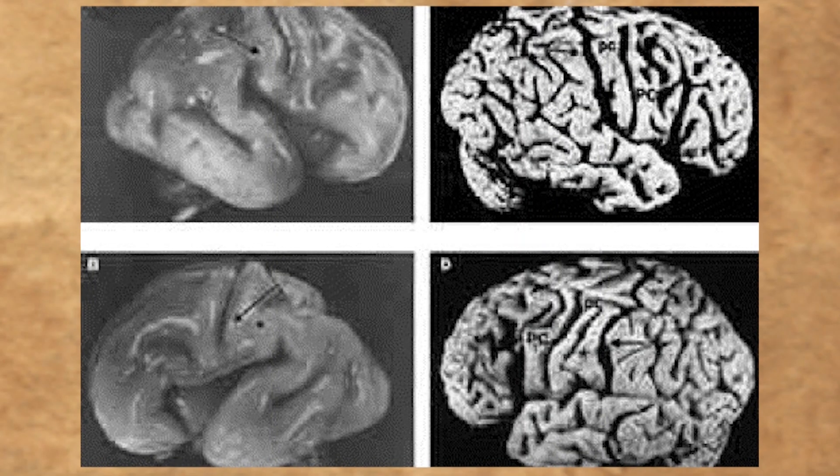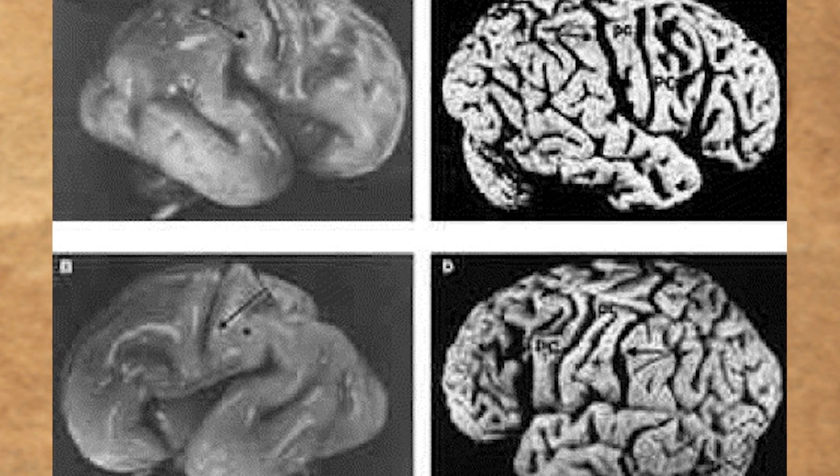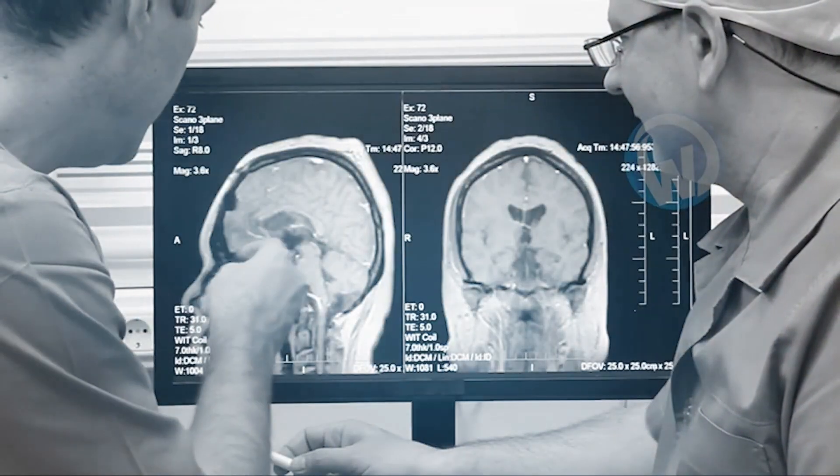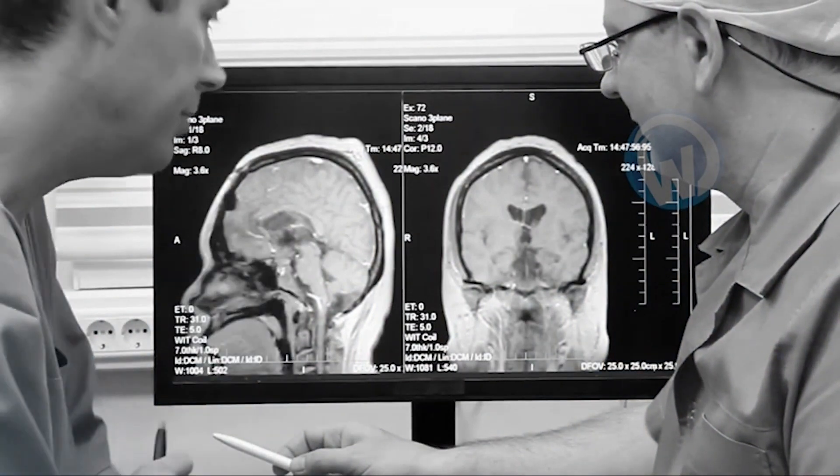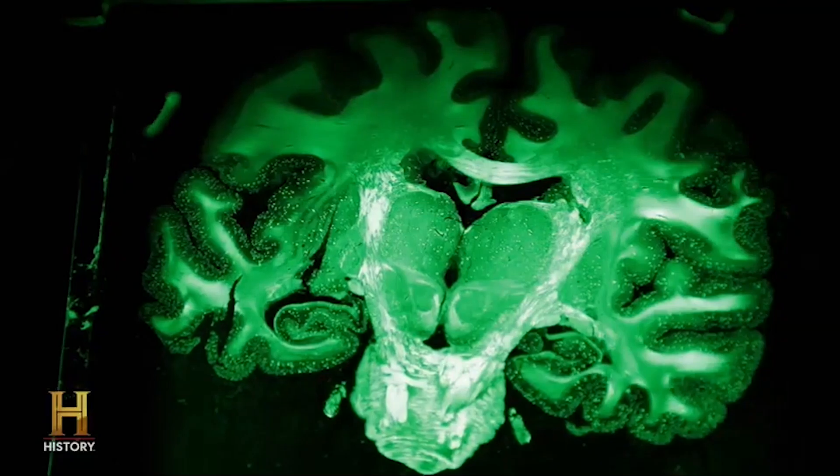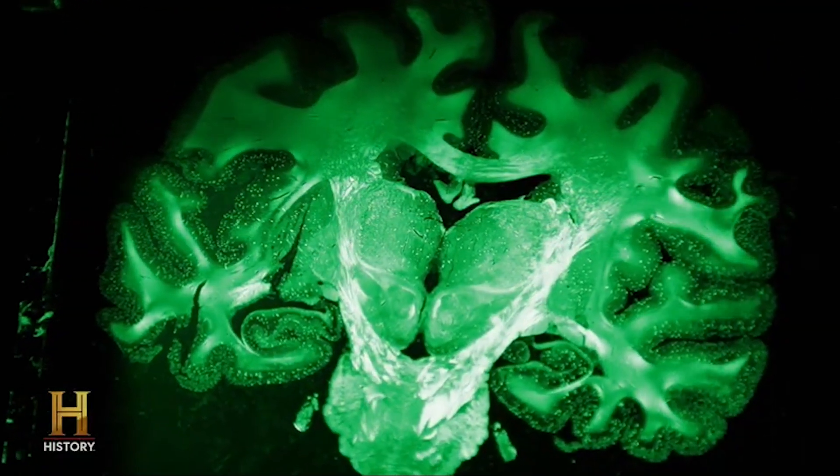He didn't stop there. He carefully captured its image through black and white photographs. It was the beginning of a scientific journey that would span decades. The years passed, and the photographs of Einstein's brain remained hidden away, awaiting their moment of discovery.